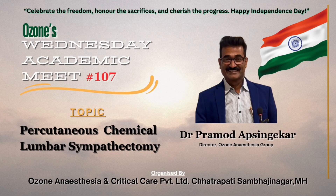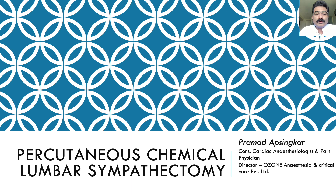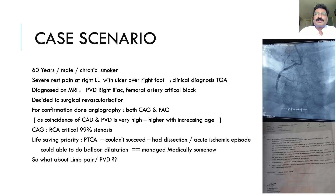Today's topic is percutaneous chemical lumbar sympathotomy. Before proceeding with the actual case discussion, let me share one of my very interesting experiences. The patient was a 60-year-old male, a chronic smoker, having severe rest pain of the lower limb with ulcers, clinically diagnosed as TAO — that is Thromboangiitis Obliterans, also known as Buerger's disease.